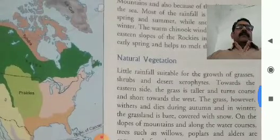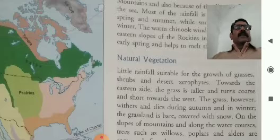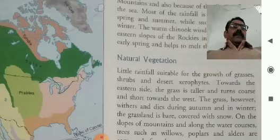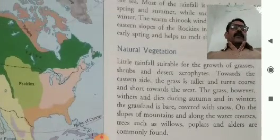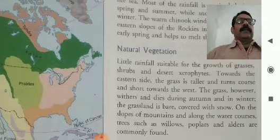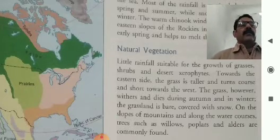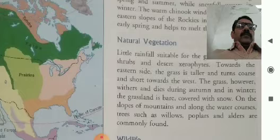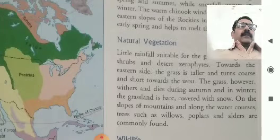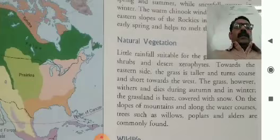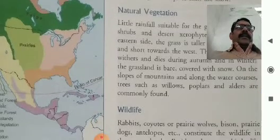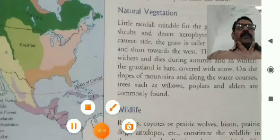Natural vegetation: What type of natural vegetation is found here? Little rainfall makes it suitable for the growth of grasses, shrubs, and xerophytes. Towards the eastern side, the grass is taller and turns coarse and sharp towards the west. The grass, however, withers and dies during autumn and in winter. The grassland is then covered with snow.